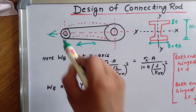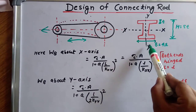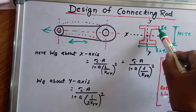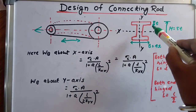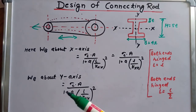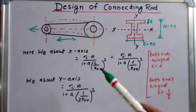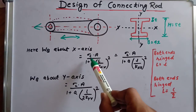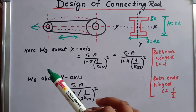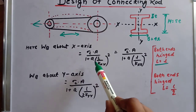In the I-section cross section, the width equals 4t and the depth equals 5t, where t is the thickness. Using the Rankine formula to find the buckling load about the x-axis, we use L = l, giving: Wb(x) = σc · A / (1 + a · (l/kx)²). For the y-axis, we put L = l/2.